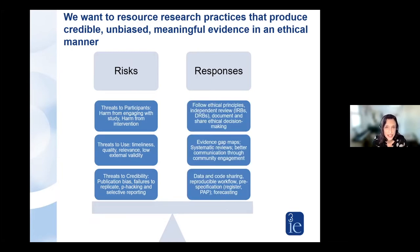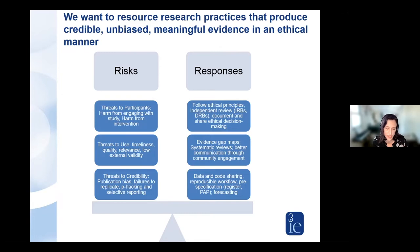Through the good work of the research community, research funders, and organizations like BITS and the Center for Open Science, we have many responses to mitigate these risks. There are lots of practices in transparency and reproducibility that improve the credibility of research. There are also practices that improve the usability of the evidence we produce, including engagement with relevant stakeholders, evidence gap maps to identify where evidence production can have the biggest impact, and reporting standards that contribute to systematic reviews and meta-analysis, which can be much more meaningful for some decision makers than just an individual study.